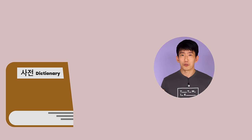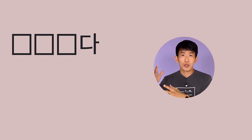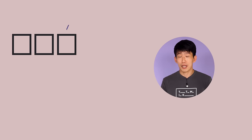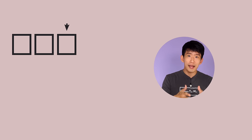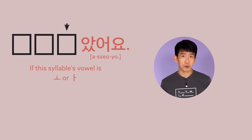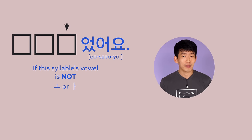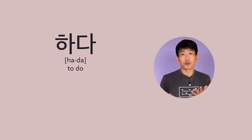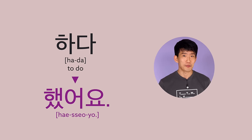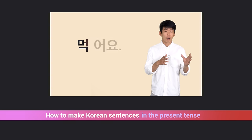The rules are quite simple. You take a verb in the dictionary form, which always ends with 다 in Korean. Remove that 다 and what's left is the verb stem. If the verb stem's last syllable is 오 or 아, you add 았어요. Verb stems with other vowels are followed by 었어요. And 하다, which means 'to do,' becomes 했어요. This is very similar to the present tense rules — we posted a video about it a couple of weeks ago, so please check that out too.